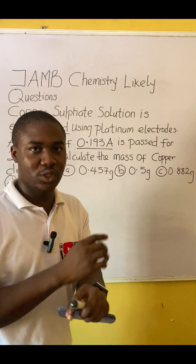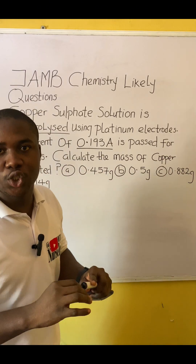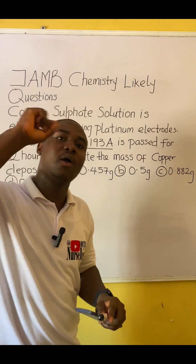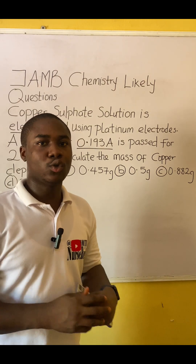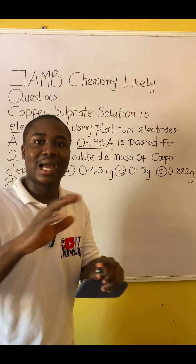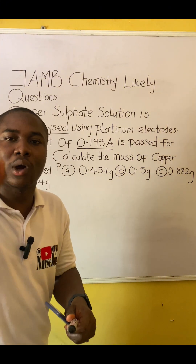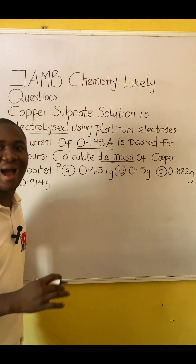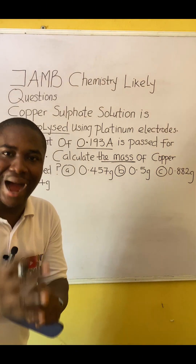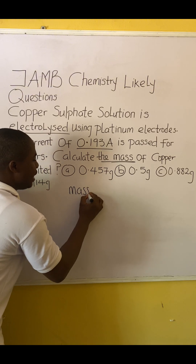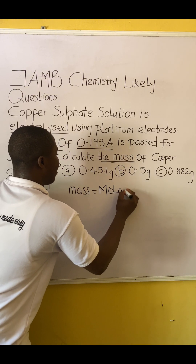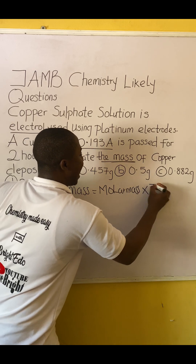It is very simple. From the look of this, they are asking us to calculate the mass of copper. There is a formula for solving mass in electrolysis, and here is the formula: mass is equal to molar mass times I times t, divided by q times F.